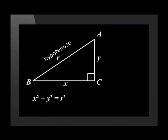The side parallel to the x axis is called x. And the side parallel to the y axis is called y. The hypotenuse is called r for radius. This means that Pythagoras' theorem will be x squared plus y squared is equal to r squared.